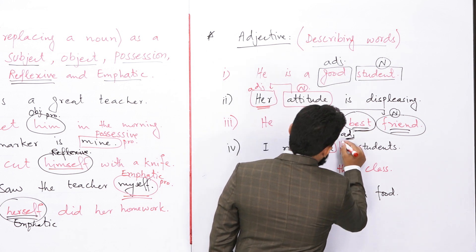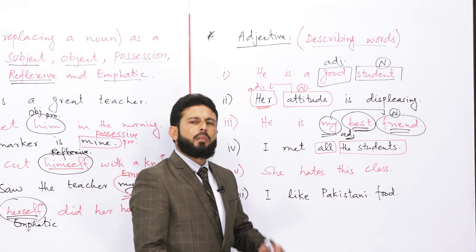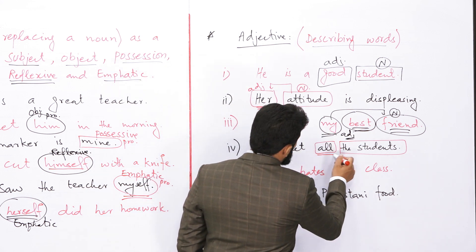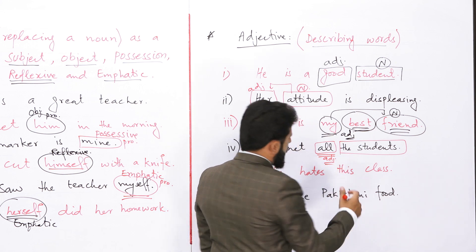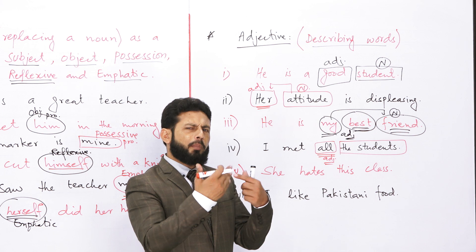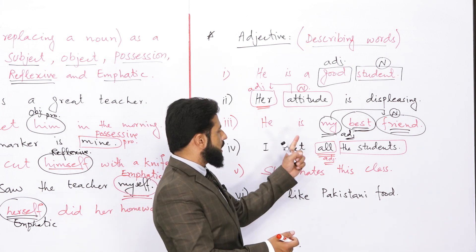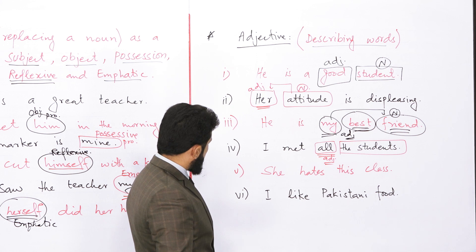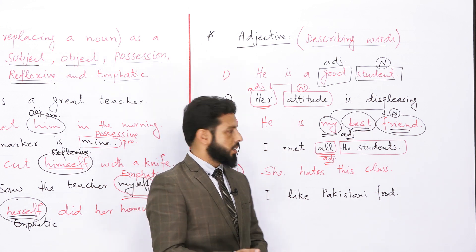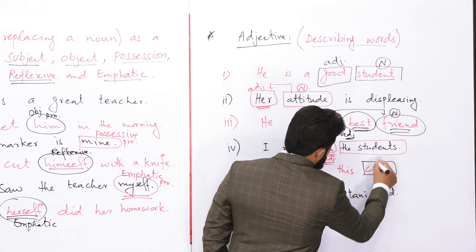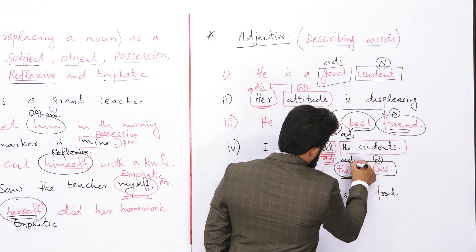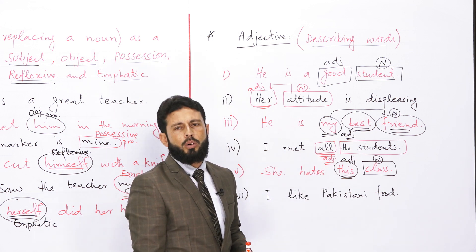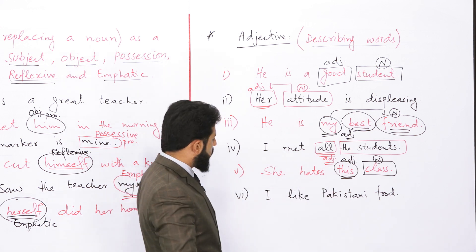'I met all the students'۔ 'All' کو ہٹا لوں تو 'I met the students' — میں students سے ملا۔ لیکن 'I met all the students' — میں تمام students سے ملا۔ یہ 'all' adjective of quantity ہے کیونکہ یہ quantity بتا رہا ہے۔ پھر اگلا sentence: 'She hates this class'۔ 'This' adjective ہے اور اسے demonstrative adjective کہتے ہیں۔